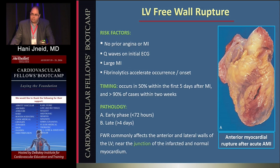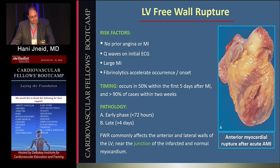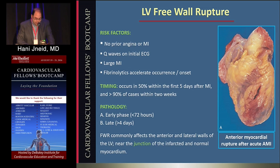It occurs in 50% of cases within the first five days, and almost all cases occur within the first two weeks. It has a biphasic onset with an early and late phase. It commonly affects the anterior and lateral walls, usually near the junction of the infarcted and normal myocardium.